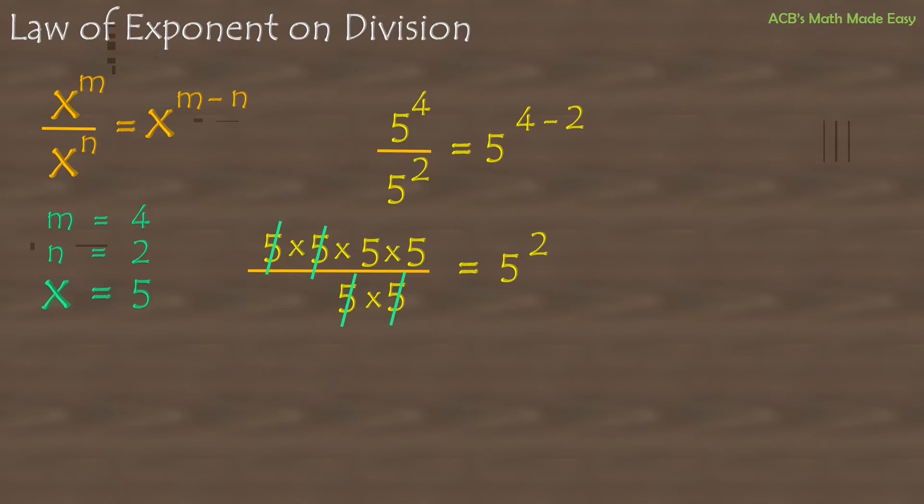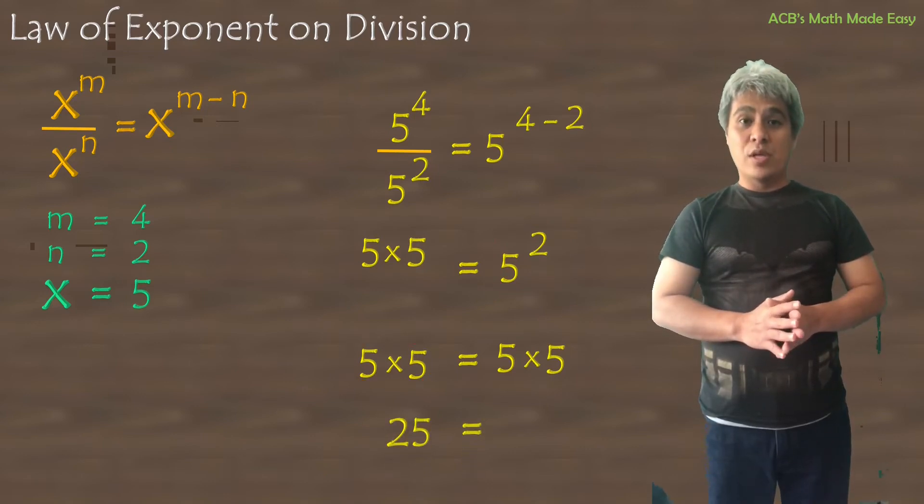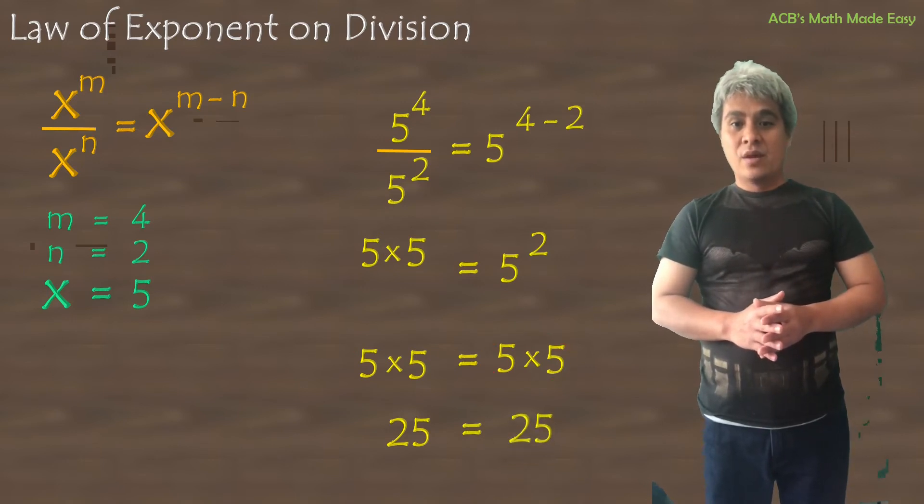Since this is multiplication and division, we can directly cross out the 4 fives. 2 fives from numerator and 2 fives from denominator. 5 times 5 is going to remain equals 5 squared is 5 times 5. 5 times 5 equals 25, and 5 times 5 equals 25.